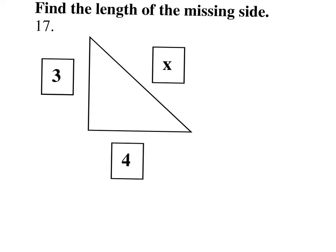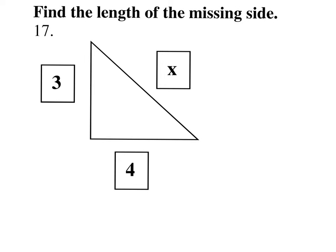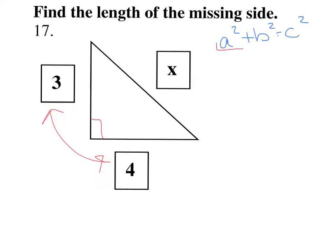Down here we have triangles, so we're going to use the Pythagorean Theorem. There's a good explanation in the lecture, so make sure you go back and watch it if you haven't. Pythagorean Theorem says a squared plus b squared equals c squared. We identify where the right angle is, because this is important to the equation. The right angle is here, so the two sides that make the right angle are a and b — that would be 3 squared plus 4 squared equals c squared.